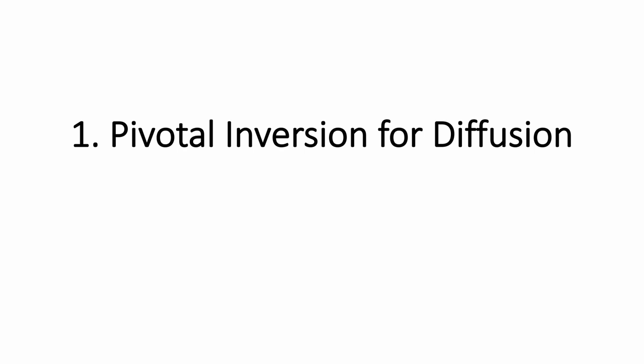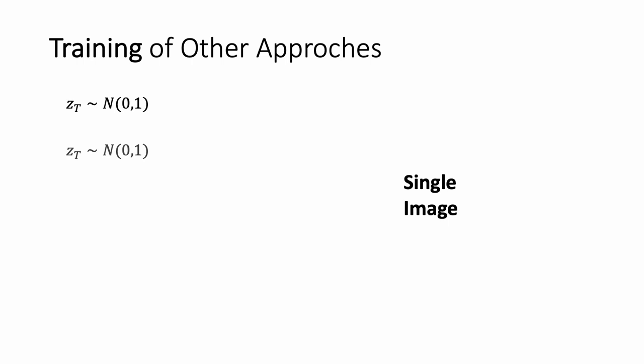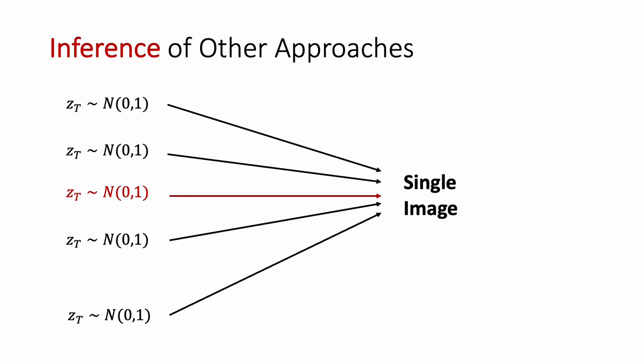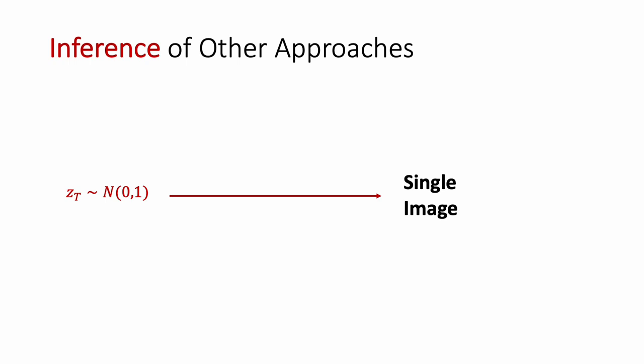Now let's get back to our method which consists of two components. The first is the pivotal inversion for diffusion. We observed that other approaches aim to map all noise vectors to a single image during training. This is inefficient as only one noise vector is used at inference. Instead, we use a single noise vector.